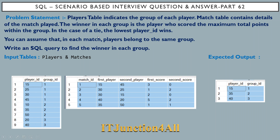The second table is the matches table, which contains all the details of the matches played. The winner in each group is the player who scored the maximum total points within the group. In case of a tie, the lowest player ID wins. The matches table contains the match ID, first player, second player, first score, and second score.